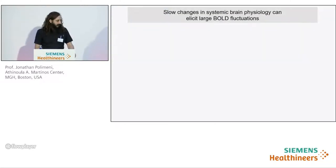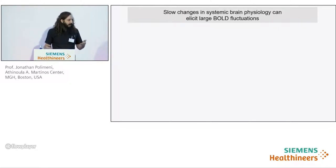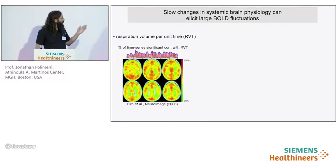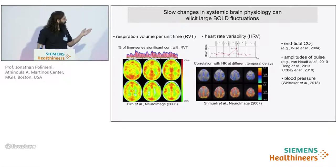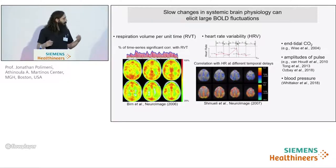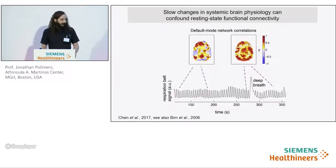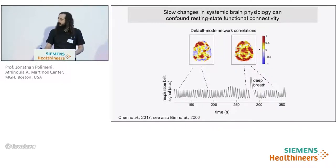First: physiological resting state networks. Slow changes in systemic brain physiology can elicit large BOLD fluctuations. Previous studies have shown that large components of the BOLD signal can be driven by respiration volume, heart rate variability, end-tidal CO2, and other systemic changes in physiology including blood pressure dynamics. These slow changes in systemic brain physiology can confound resting state functional connectivity.